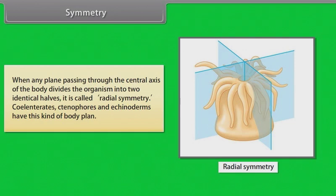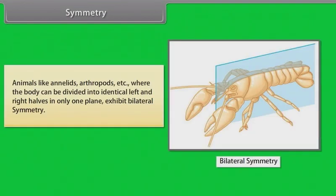Cnidarians, Ctenophores and Echinoderms have radial symmetry. Animals like annelids and arthropods, where the body can be divided into identical left and right halves in only one plane, exhibit bilateral symmetry.